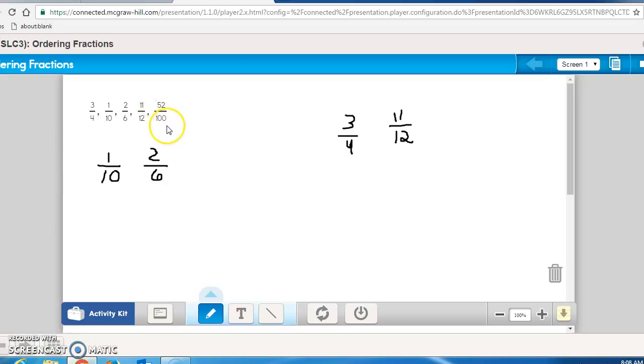And 52 out of 100, well, 50 out of 100 is really close to half. So I know that that one would go in the middle, because 50 out of 100 would be exactly half. So when I look at this, 1 out of 10 would be less than 2 out of 6.